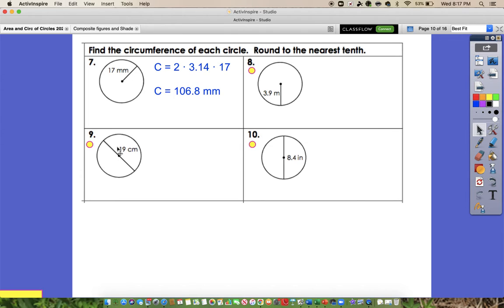So I'm going to go ahead and work number 9, and then I'm going to pause and let you all work number 8 and 10 on your own. So for number 9, we're still finding the circumference, but this time we've been given the diameter, which is 19 centimeters. So this time we want to use the circumference equals pi times diameter formula.